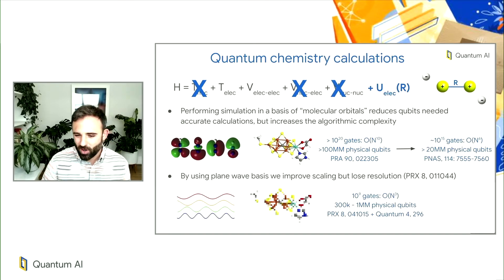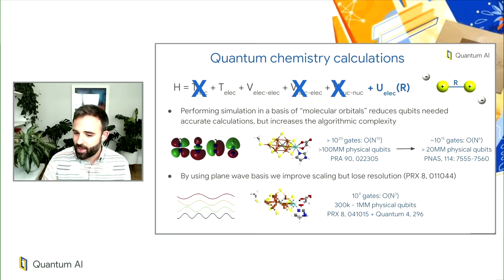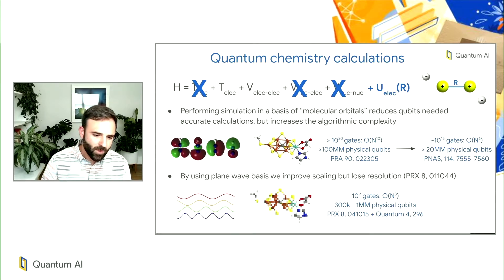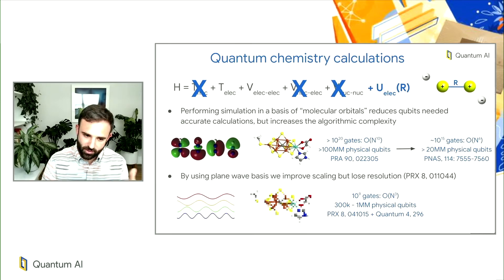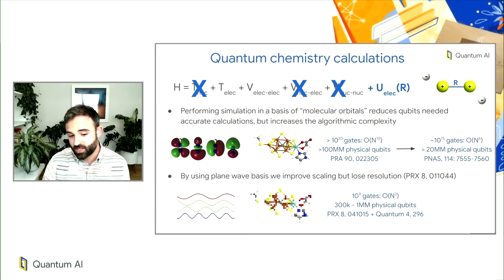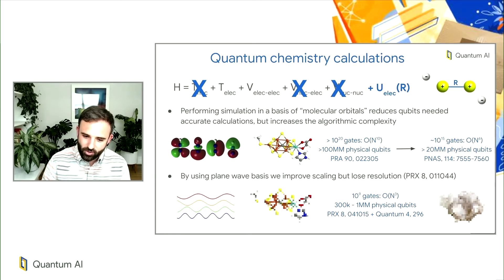Around that time, our team was thinking about what we could do with about a million physical qubits. Working in collaboration with Garnet Chan's group at Caltech, we found that if we simplify the basis functions and use a plane wave basis — where the Coulomb operator is diagonal — we get much improved scaling with only n² terms instead of n⁴. We lose some resolution compared to molecular orbitals, but this enables simulation of interesting models of materials with a few hundred thousand to about a million physical qubits.